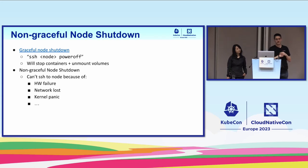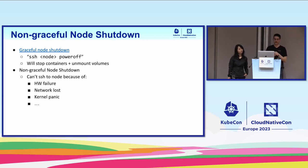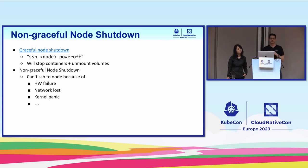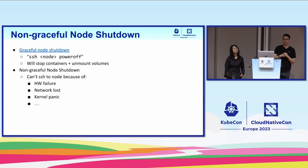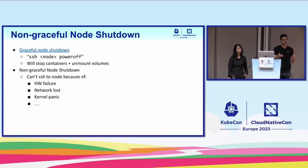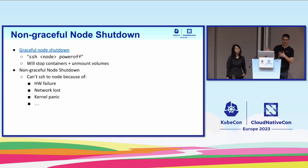I'd like to dive deeper into non-graceful node shutdown, which is a new feature in Kubernetes 1.26 as beta. First, what is graceful node shutdown? It is a Kubernetes feature in Kubelet that handles the situation when a user wants to turn off a node — they SSH to the node, issue a shutdown command, or use some API to send the shutdown signal. Kubelet will gracefully stop all the containers, unmount all the volumes, and mark itself as not available. That's graceful node shutdown, when you can SSH to a machine and shut it down.